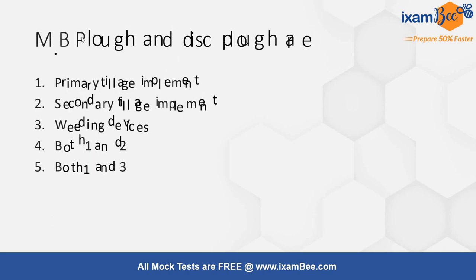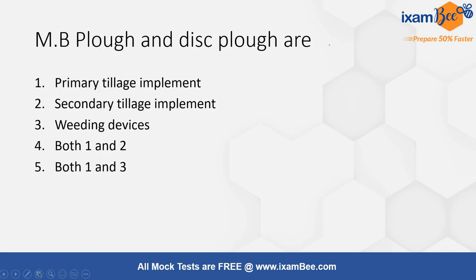The next question is: MB plough and disc plough are mainly primary tillage implements, so the correct answer is option number 1.